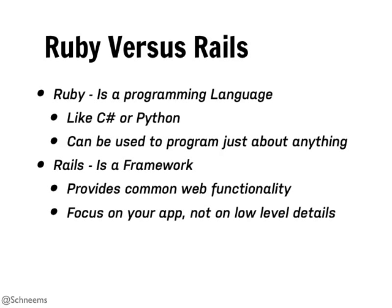Ruby versus Rails: Ruby is a programming language. It's like C Sharp, Java, C++, Python, Scheme, or Lisp - if you use any of those. It can be used really to program anything you want.